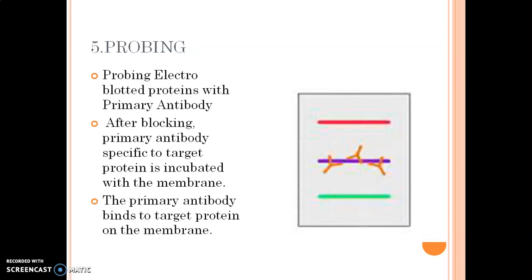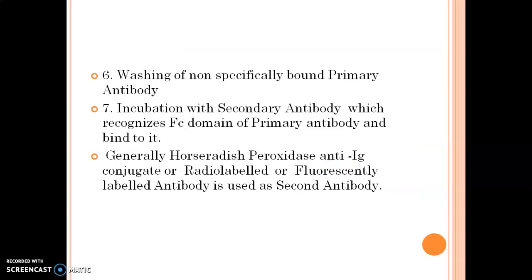The next step is probing — that is, probing the electroblotted proteins with the primary antibody. After blocking, the primary antibody specific to the target protein is incubated with the membrane. The primary antibody binds to the target protein. After the probing process, we wash off the unbound primary antibody.